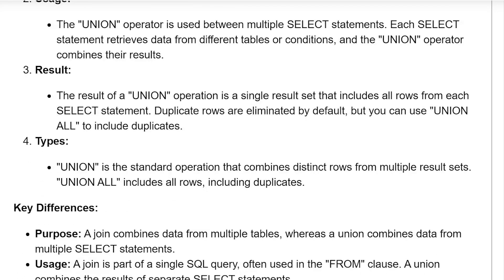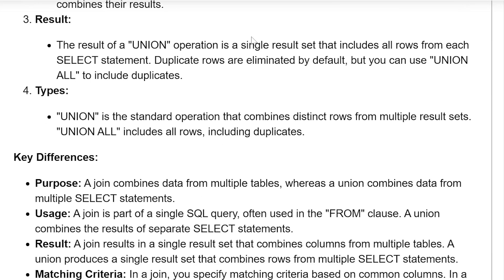The union operator is used between multiple SELECT statements. Each SELECT statement returns data from different tables or conditions, and the union operator combines their results. The result of the union operator is a single result set that includes all the rows from each SELECT statement. Duplicate rows are eliminated by default, but you can use UNION ALL to include duplicates.